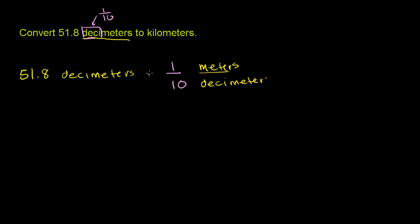Now, if you multiply these two things, what do we get? Well, the decimeters cancel out, and we divide 51.8 by 10. Multiplying by 1 tenth is the same thing as dividing by 10. So this is going to be equal to 51.8 divided by 10. The decimal is just going to move to the left. It's going to be 5.18. So this is going to be 5.18 meters.